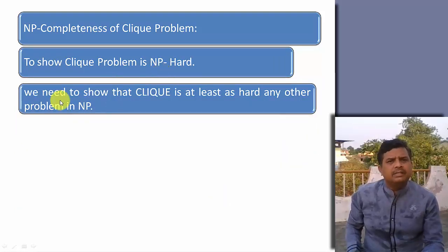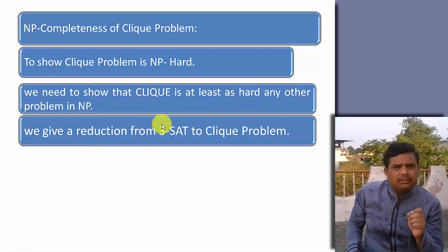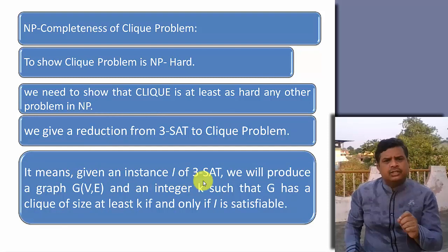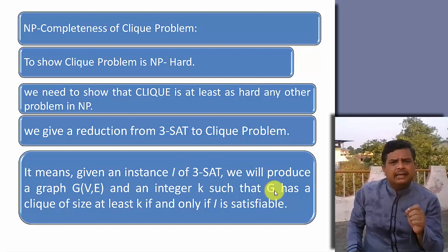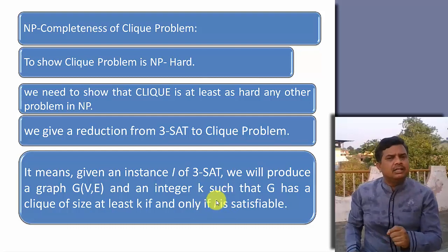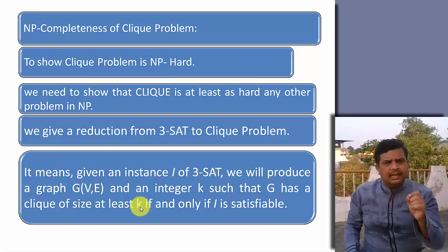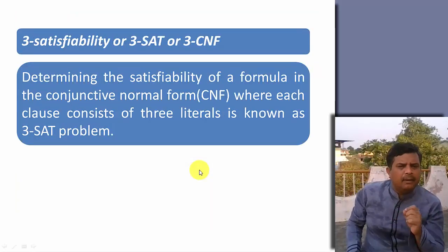Now, show that the clique problem is NP hard. We need to show that clique is at least as hard as any other NP problem. We will take a 3-SAT problem and reduce the 3-SAT problem to a clique problem. Given an instance I of a 3-SAT, we will produce a graph G = (V, E) and an integer K such that G has a clique of size at least K if and only if I is satisfied. This means we take an instance I in 3-SAT, find a graph, find its clique, and it should match K. Similarly, in reverse, if we take a graph with clique K, it should satisfy the 3-SAT problem.